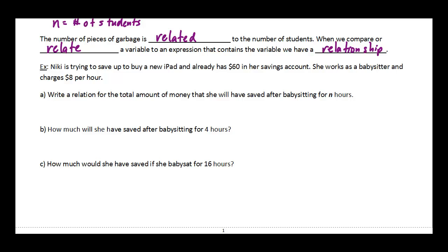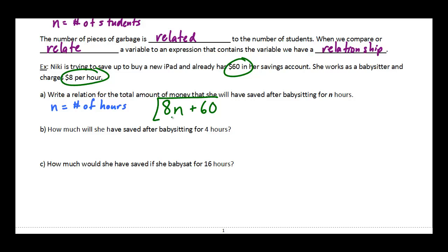Let's look at this last example. Nikki is trying to save up to buy a new iPad and already has $60 in her savings account. She works as a babysitter and charges $8 per hour. We need to write a relation for the total amount of money she will have saved after babysitting for n hours, where n equals the number of hours. Since she earns $8 per hour, part of our relation is 8 times n. But she also already has $60 saved, so we add that on: the relation is 8n + 60.